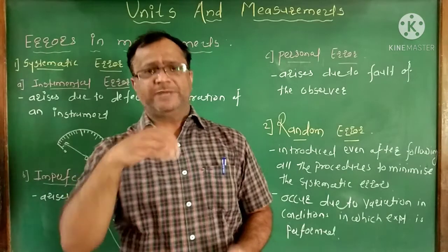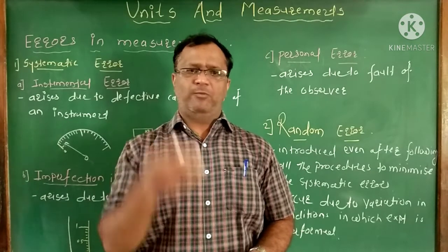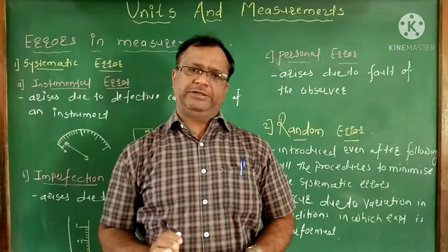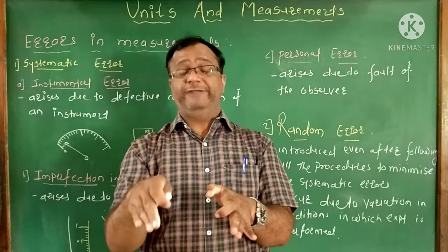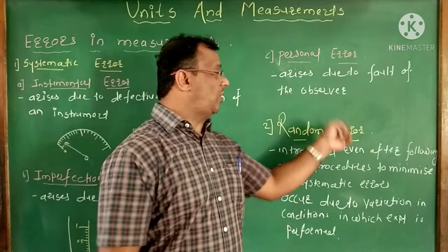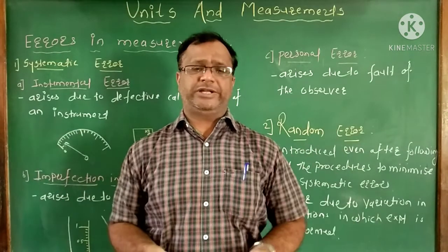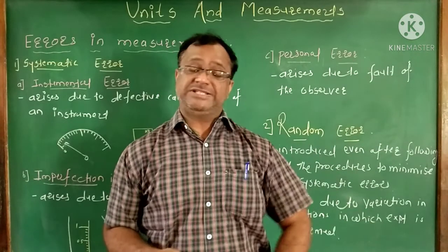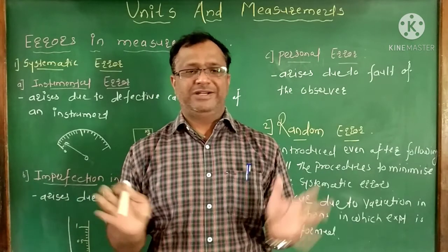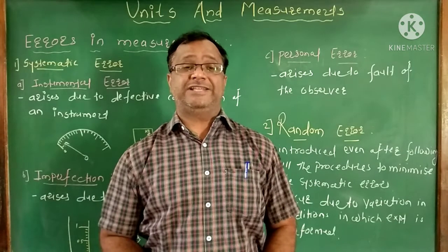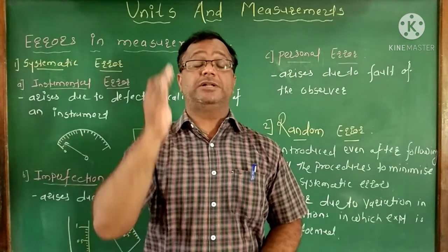For example, suppose you want to measure temperature. If you perform the experiment in the morning, afternoon, and evening, the climatic conditions are different, causing a difference in temperature readings — such error is called random error. Similarly, if you want to measure current in a circuit but there are fluctuations in the AC signal causing the current to change, this error is not due to the person or instrument — such error is called random error, also known as accidental error.